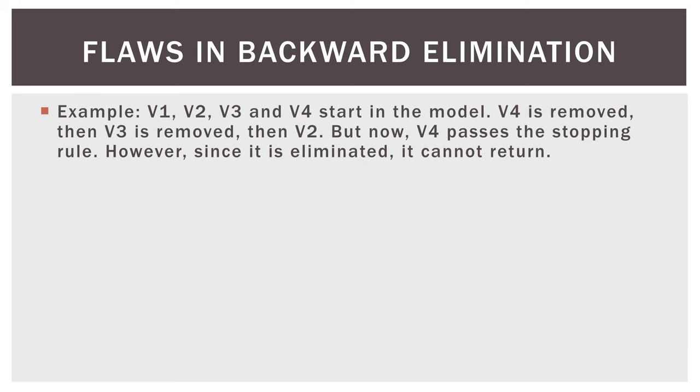Here's a quick example. This is a very generic off the cuff example. We have variable one, variable two, variable three, and variable four. So V1, V2, V3, and V4. They start in the model by default. That's all our variables. They start in the model. So let's say V4 is removed, then V3 is removed, and then V2. But now we look at our variables, and it's possible that V4 could, if allowed, get back in the model. But since it is eliminated, it cannot return.